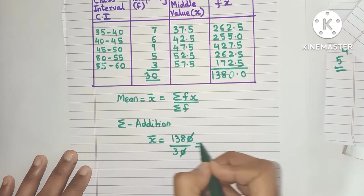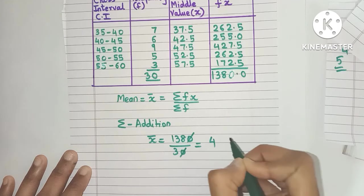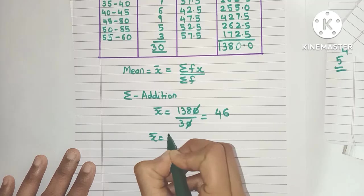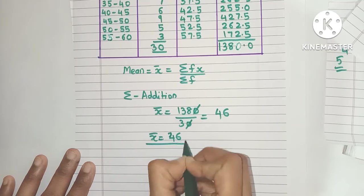The 0 and 0 will cancel, and this will go in 3's table. 3 fours are 12 and 3 sixes are 18. That means the mean for this grouped data is 46.